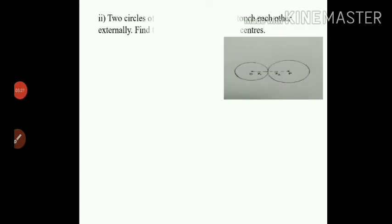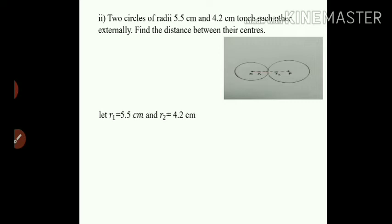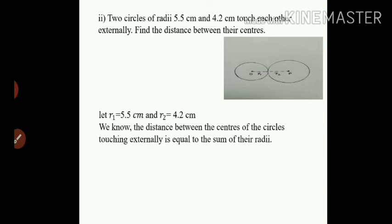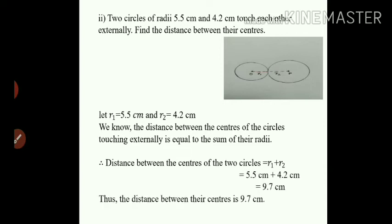Sub-question number 2: two circles of radii 5.5 cm and 4.2 cm touch each other externally. Find the distance between their centers. Let R1 equal 5.5 cm and R2 equal 4.2 cm. Since the circles touch each other externally, the distance between their centers equals the sum of their radii, R1 plus R2. With O and P as the centers of the two circles, distance OP equals 5.5 plus 4.2, which is 9.7 cm.